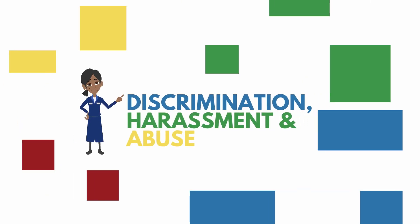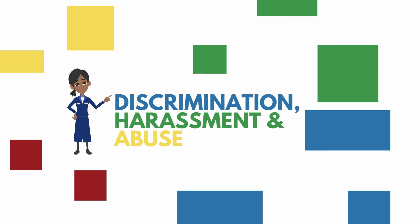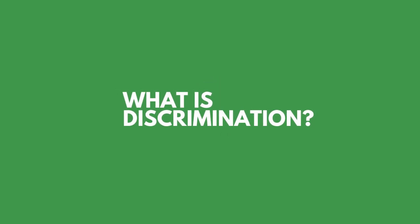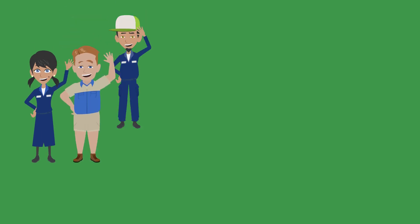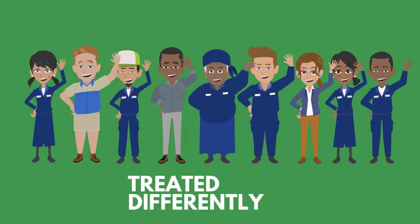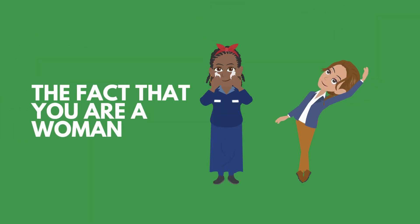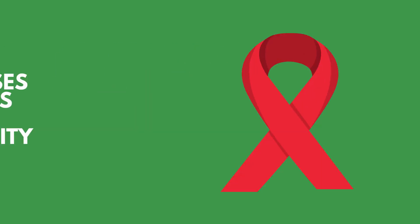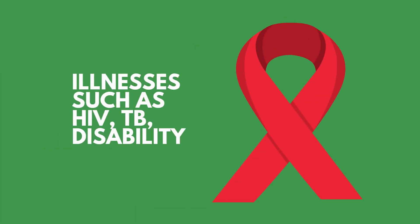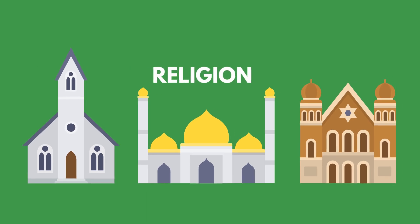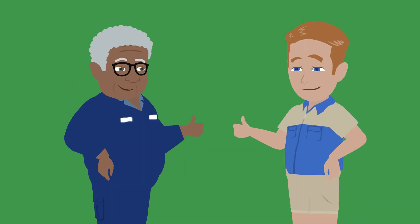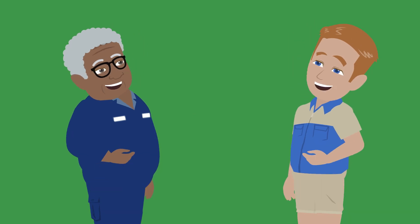What is discrimination? Discrimination is when you are treated differently by people because of who you are — for example, because of your race, lifestyle, the fact that you are a woman, illnesses such as HIV or TB, disability, religion, or any other form of discrimination. No one must discriminate against anyone because of who they are.